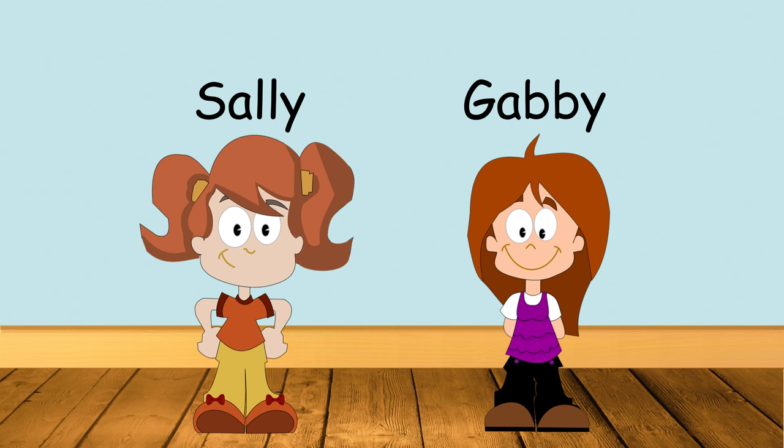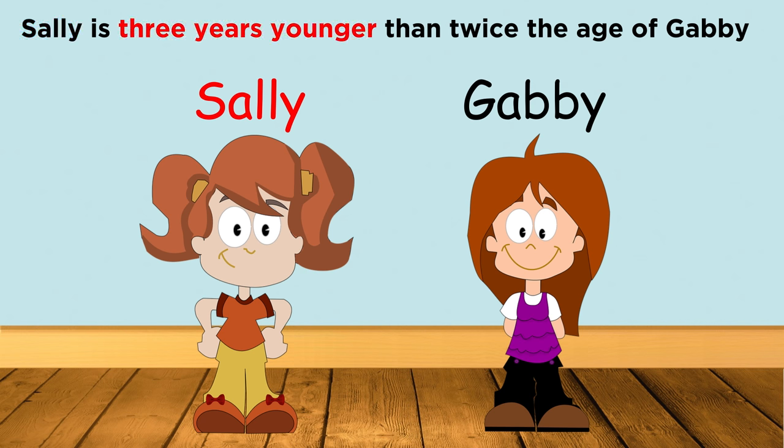Take the following example. There are two sisters, Sally and Gabby. Sally is three years younger than twice the age of Gabby. If Gabby is twelve, how old is Sally?